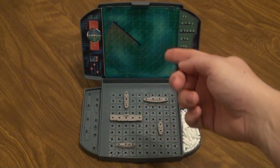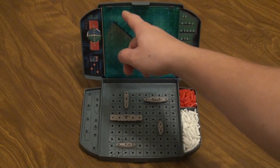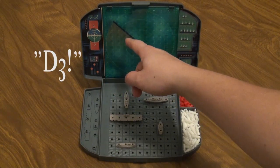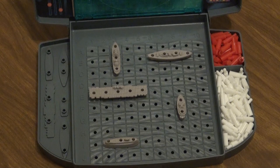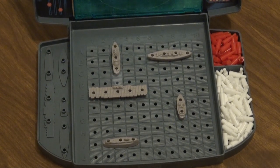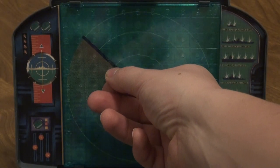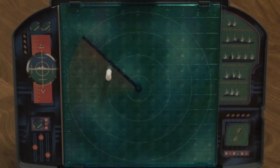After the players have placed all their ships, the game can begin. On their turn, each player calls out a point on the grid, such as G3 or B2. Their opponent looks at their grid and replies whether the point is empty, a miss, or that's where one of the ships are, a hit. The player then marks their guess on the upper grid, and it's the next player's turn.